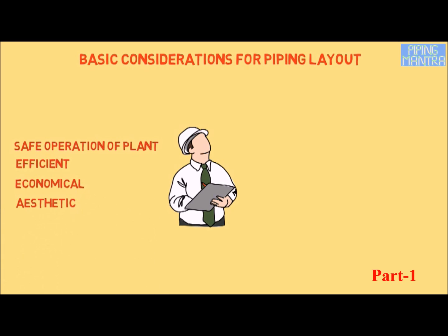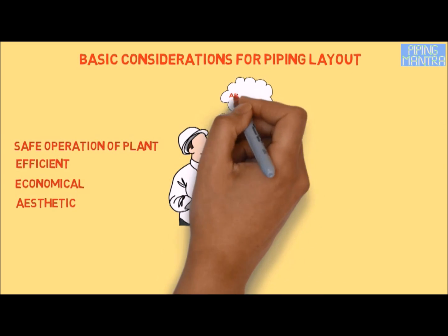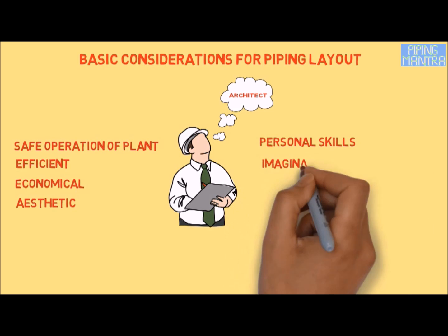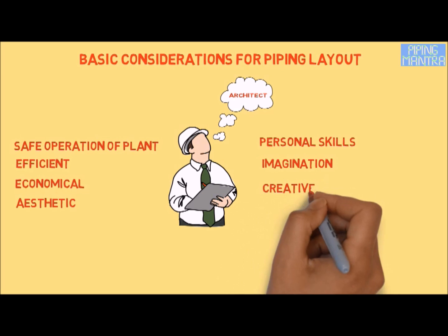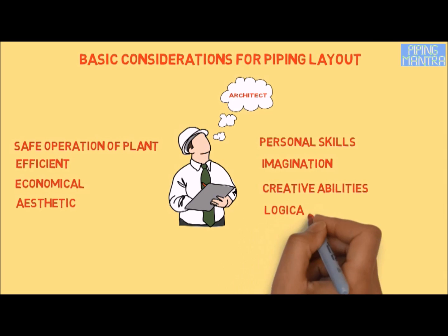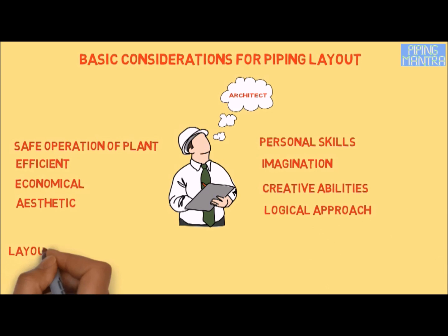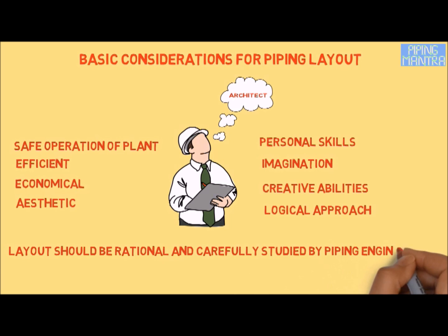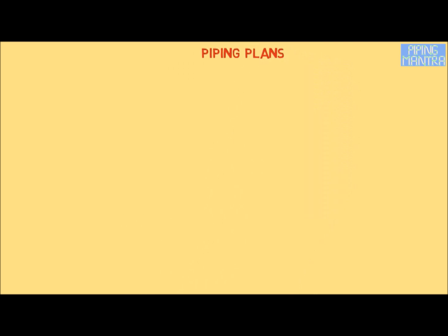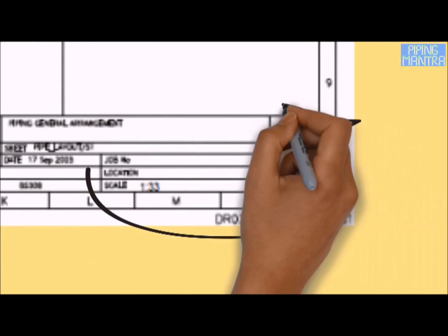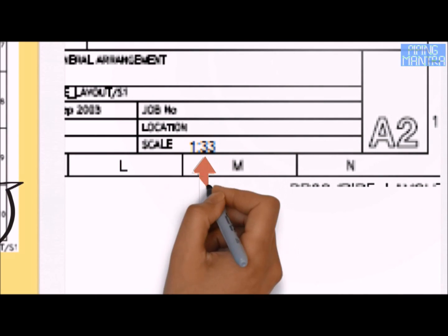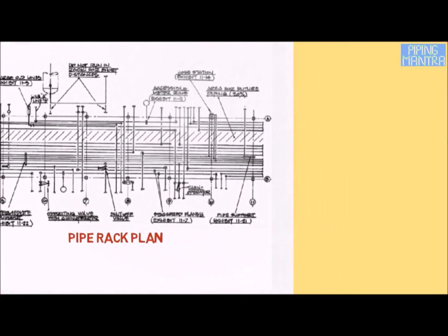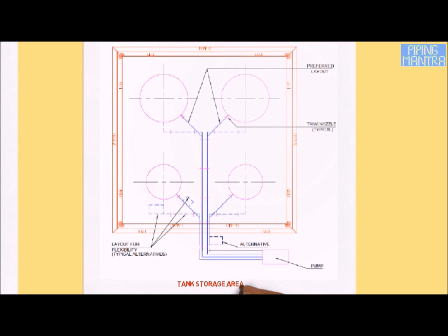The job of the piping layout engineer is like an architect, where he has to use his personal skill, imagination, and creative abilities in making the layouts. He has to take a logical approach, and the layout should be rational and carefully studied. Piping plans are usually made at a scale of 1:33, while for pipe rack, utility storage tanks we use 1:50 scale.